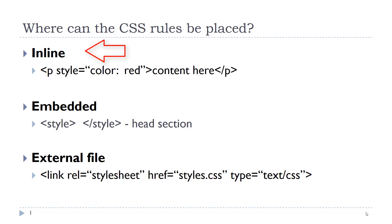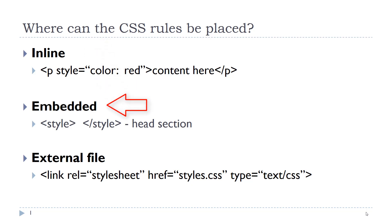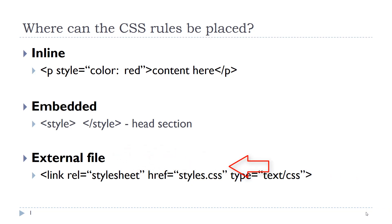We have learned how to write an inline style and an embedded style. We will now look at an external file. An external file is merely a separate text file that contains the CSS rules and it is saved with a .css extension. It is referenced in the HTML document using the link tag. This is a one-sided element with two needed attributes: rel and href. The type attribute is no longer required in HTML5.